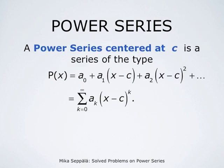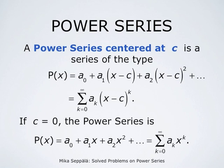A power series centered at a number c is a series of the type p(x) equals a0 plus a1 times (x minus c) plus a2 times (x minus c) squared plus and so forth. Using the summation symbol, this becomes summation k from 0 to infinity of ak times (x minus c) to the power k. If c is 0, then the power series simplifies to a0 plus a1*x plus a2*x squared plus and so forth, which is summation k from 0 to infinity of ak times x to the power k.